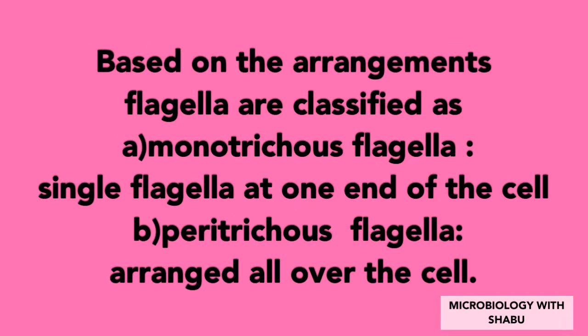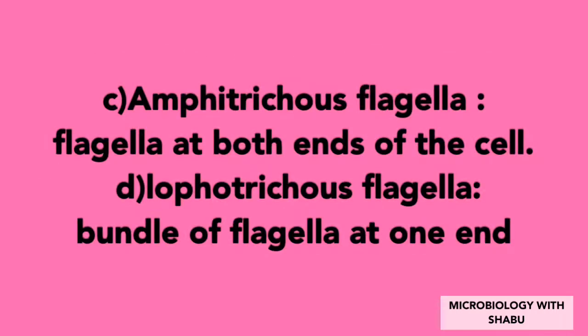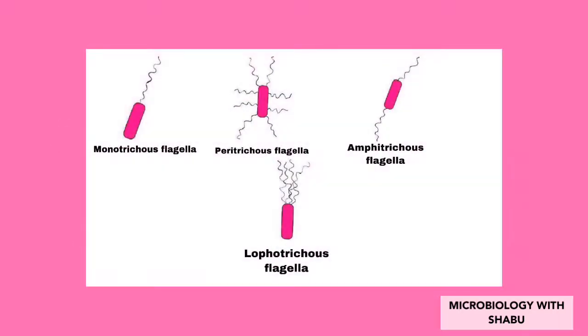Based on their arrangement, flagella are classified as: (a) monotrichous — a single flagellum at one end of the cell; (b) peritrichous — flagella arranged all over the cell; (c) amphitrichous — flagella at both ends of the cell; (d) lophotrichous — a bundle of flagella at one end.